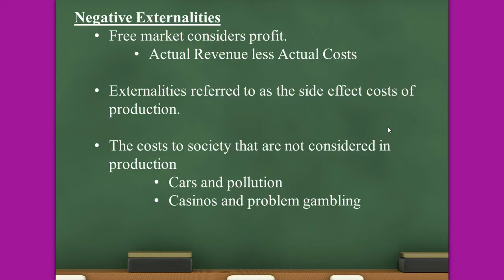So remember the four types of market failure — they're all in the study design, so you really need to know them: public goods, asymmetric information, market power, and negative externalities.